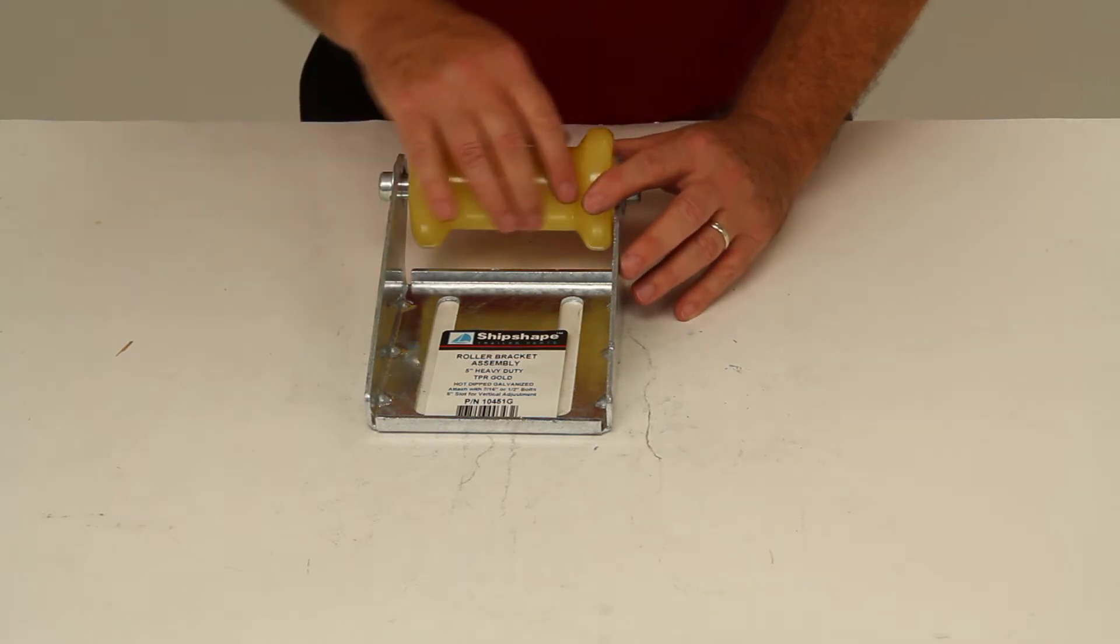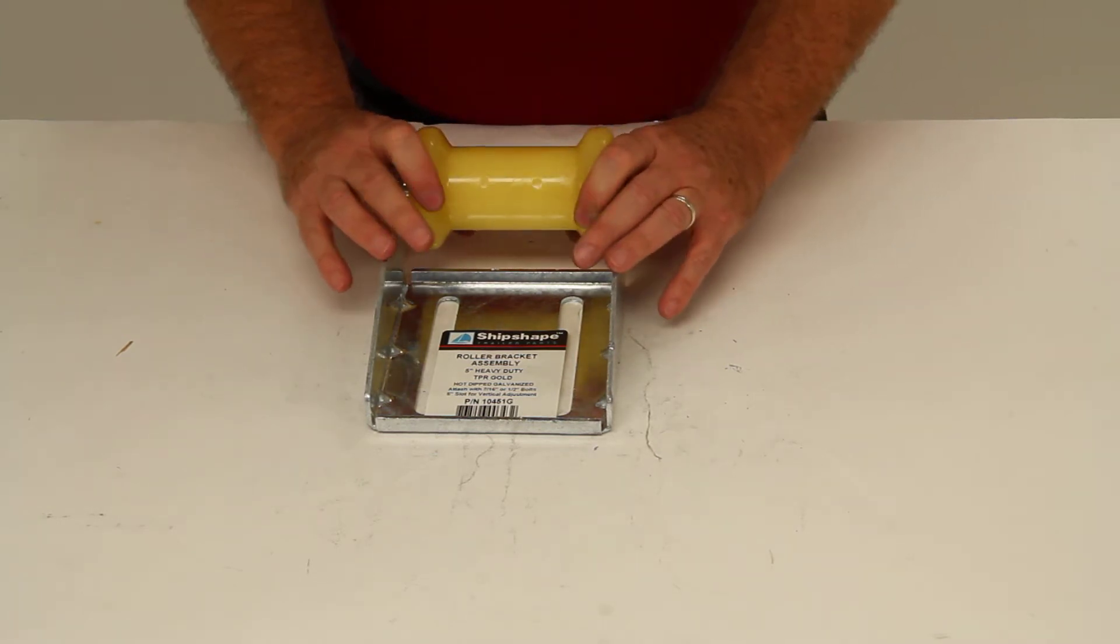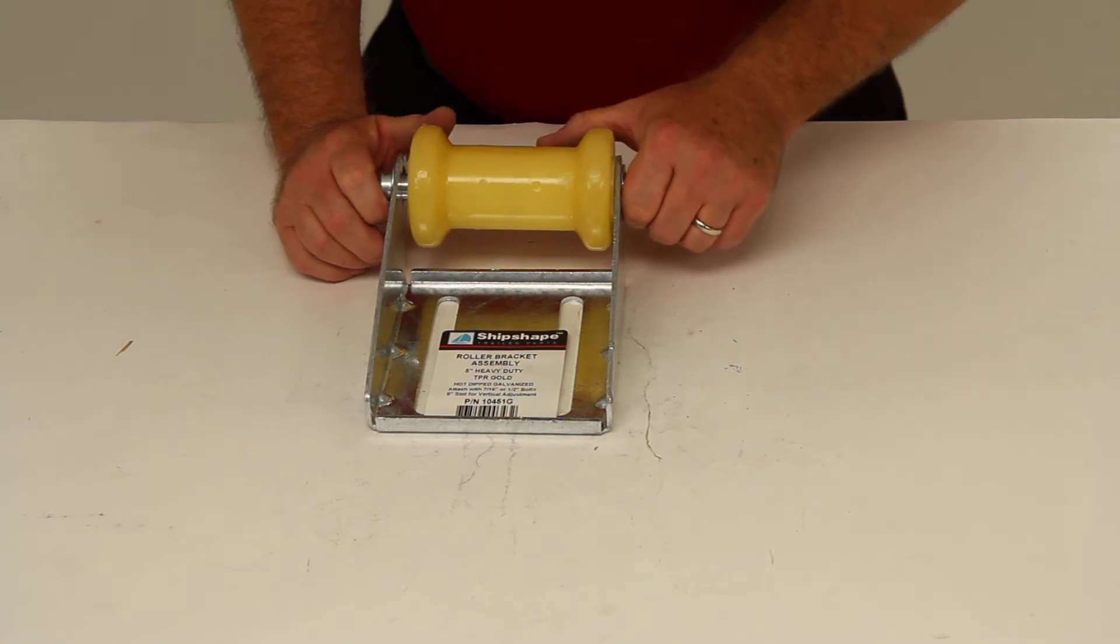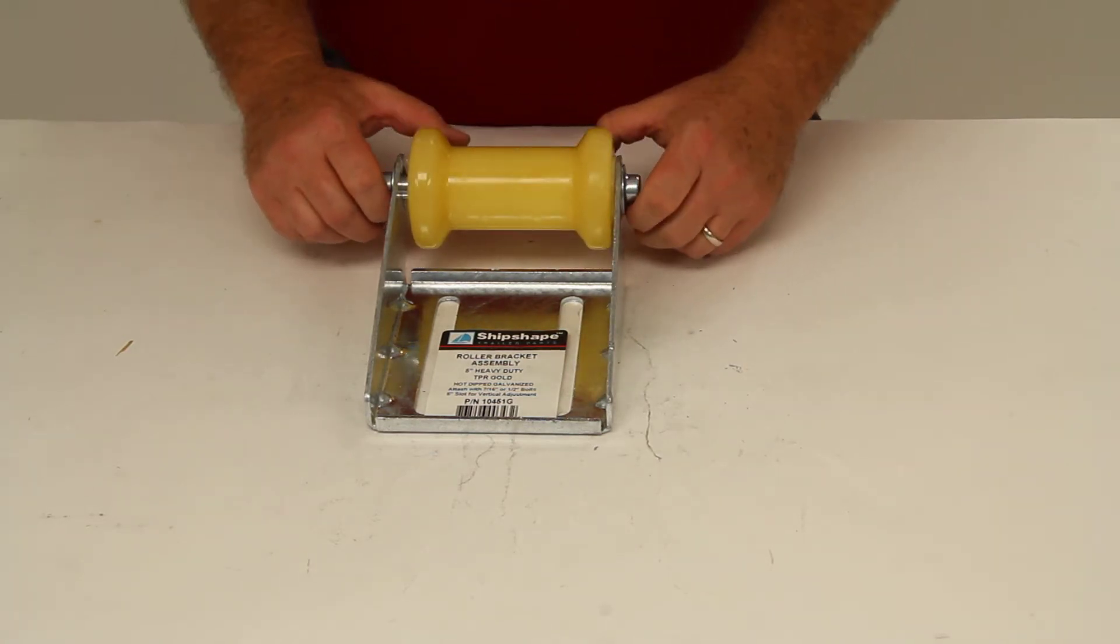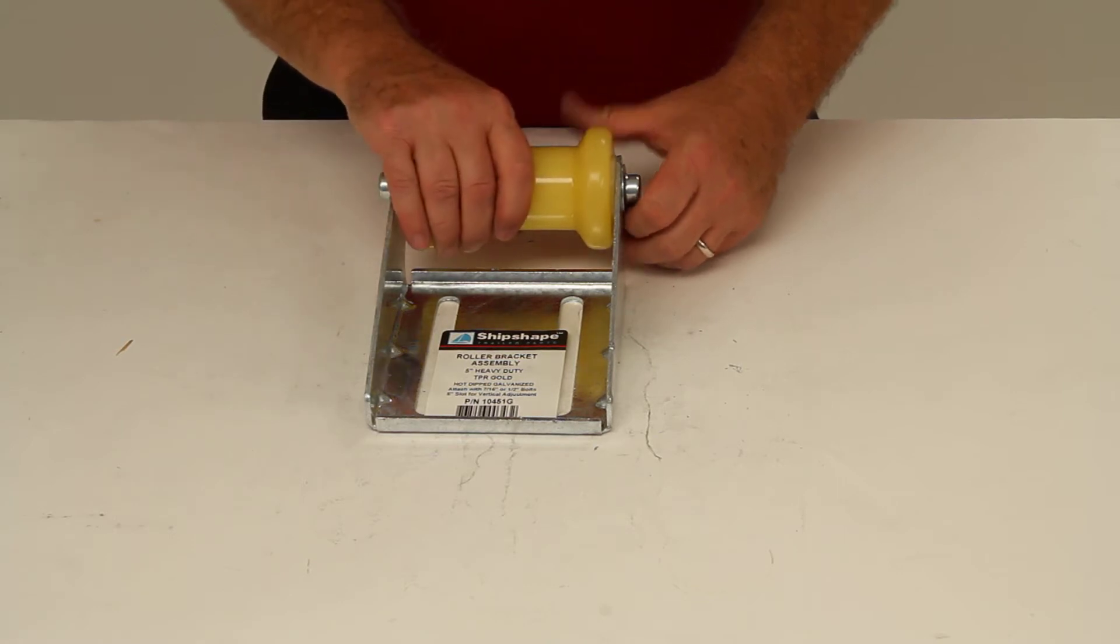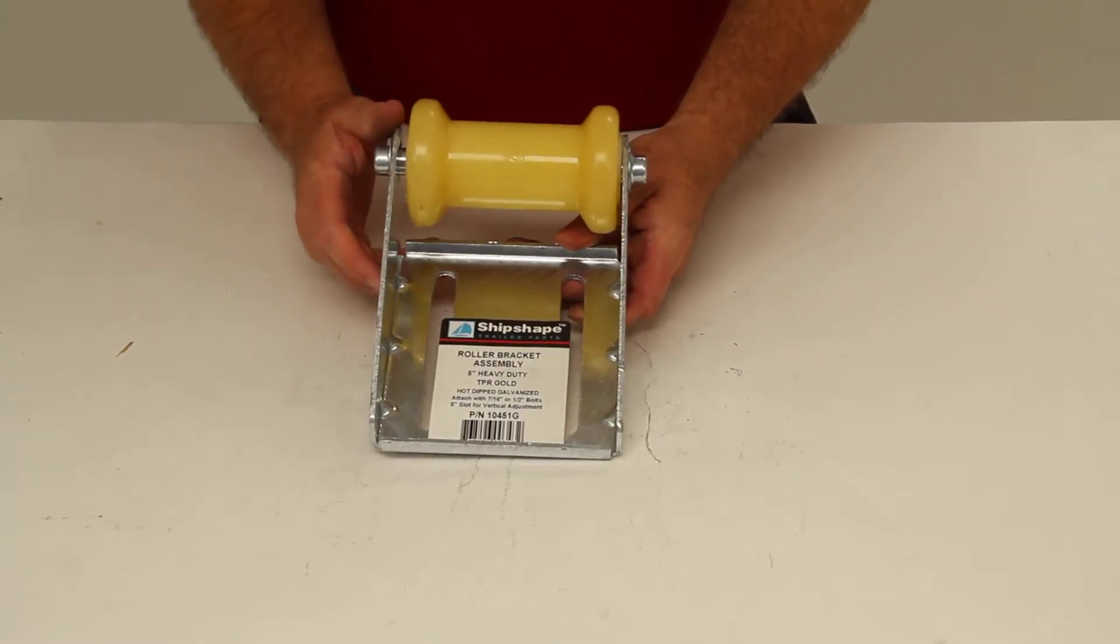This spool roller will support your boat's keel as it sits on the trailer and it prevents the bow of your boat from making contact with your winch. This will help ease loading and unloading of the boat and it helps to absorb the road shock while the boat is being trailered.